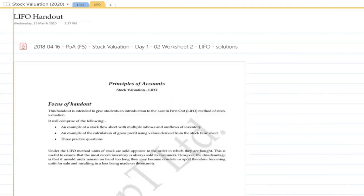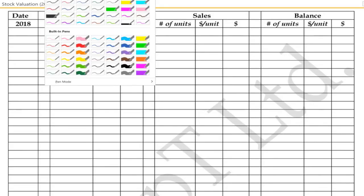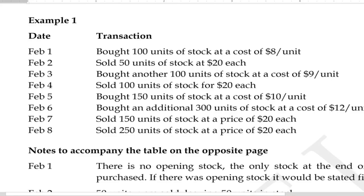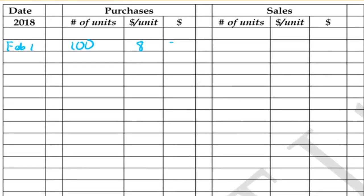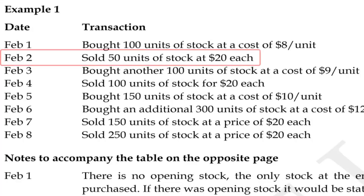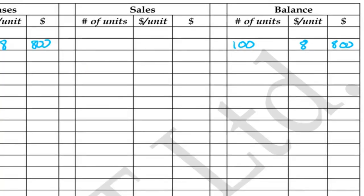Now let's switch to the LIFO handout. On February 1st, we bought 100 units at $8 each — that's $800 worth of units in the balance. On the next transaction, we sold 50 units at $20 each — that's $1,000 worth of sales. Since we only have one batch, there's no choice to make. If we sold 50 from 100, we have 50 units remaining at $4 each — wait, at $8 each — giving $400.